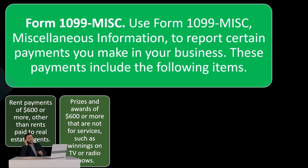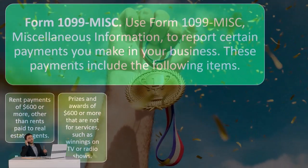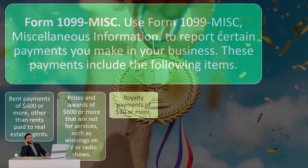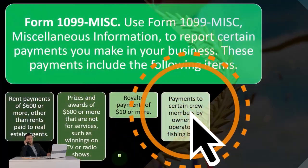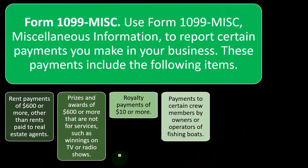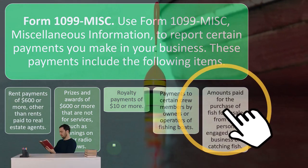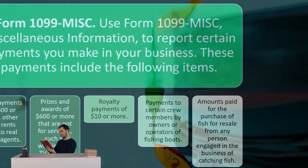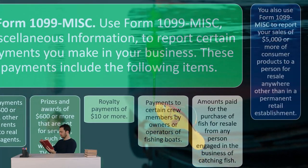Then there are prizes and awards of $600 or more that are not for services, such as winning a TV or radio show. Royalty payments of $10 or more — that's a pretty low threshold. Also, payments to certain crew members by owners or operators of fishing boats, and amounts paid for the purchase of fish for resale from any person engaged in the business of catching fish. There are some special rules related to fishing practices.